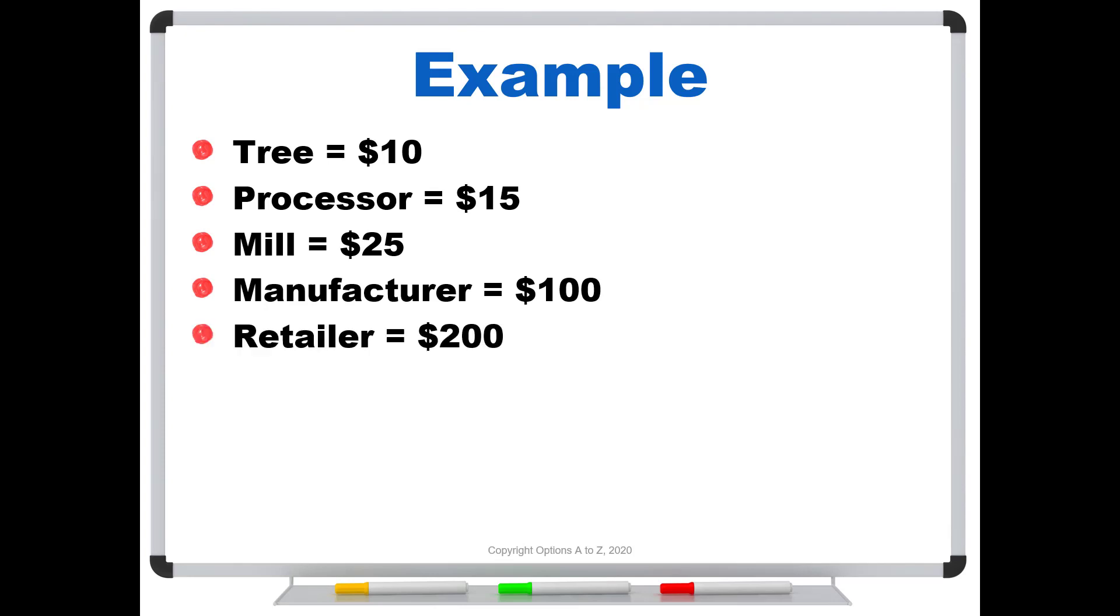So one definition is we could say that it is the final goods and services or the completed goods and services here. So right here at the bottom, 200 bucks. So if this was the only item that we produced on our small island economy, our GDP would be 200. It's the final value of the goods and services.